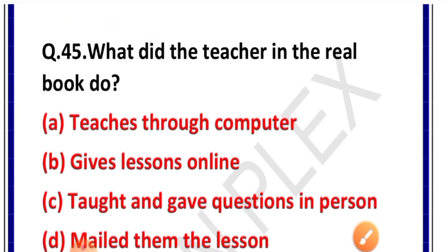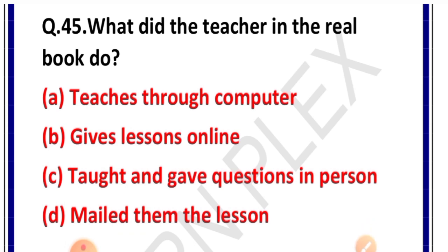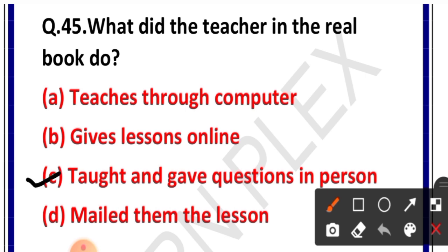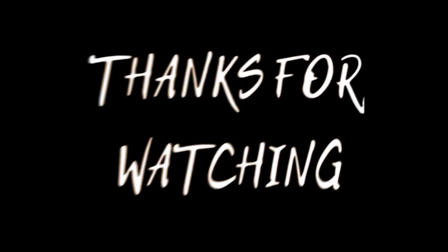Question number 45: What did the teacher in the real book do? Options: A. Teaches through computer, B. Gives lessons online, C. Taught and gave questions personally, D. Mail them the lesson. Correct answer is option C — taught and gave questions personally. Woh us student ko personally padhate the aur questions khud karne ke liye dete the.